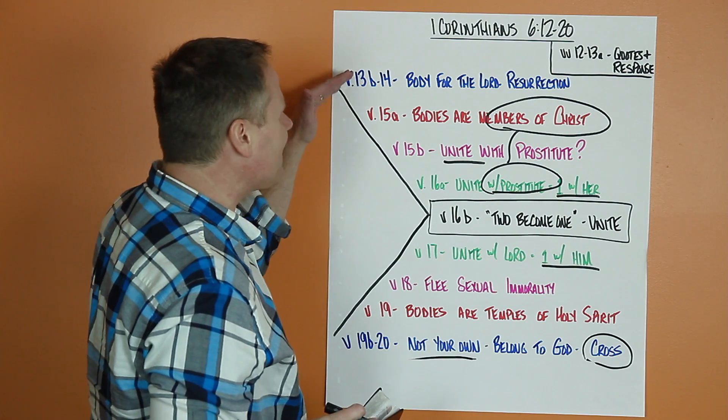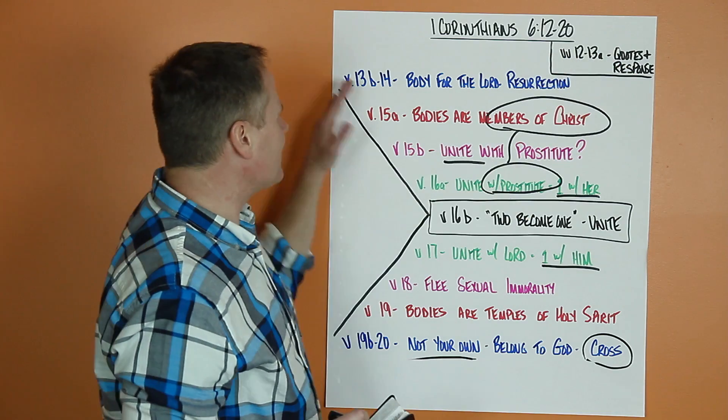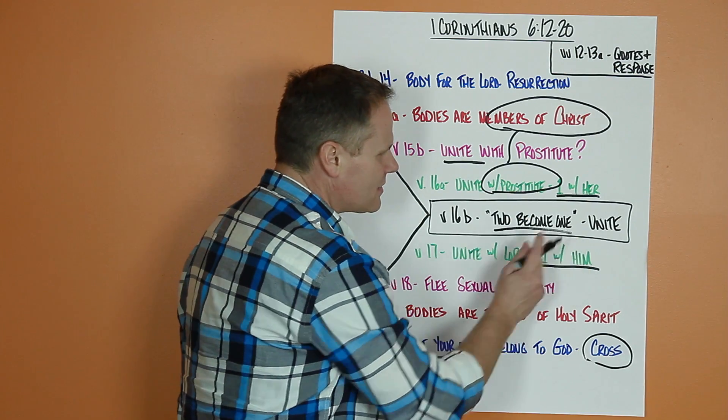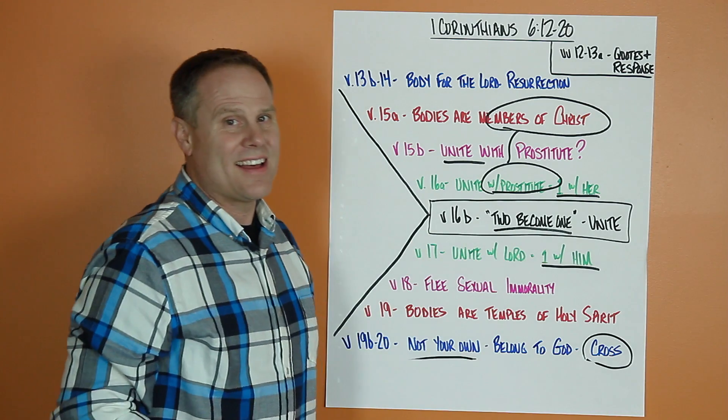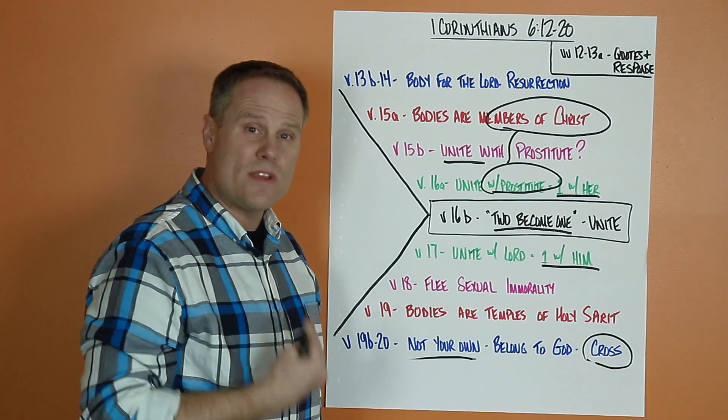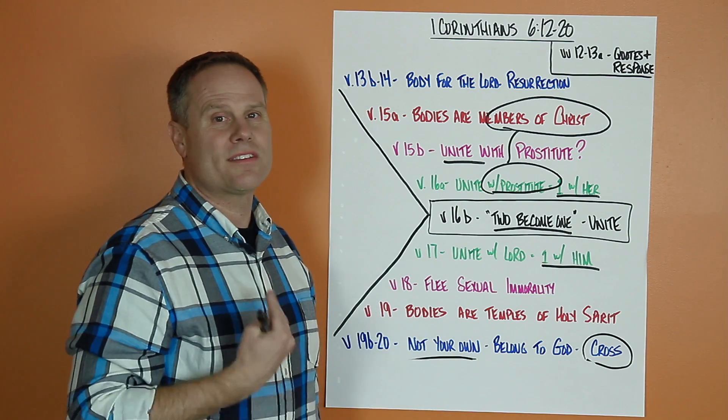I think verses 12 through 20, when he starts with those quotes and responses, then it's a chiastic structure reminding us of how serious sexuality is, that you don't want to mess with that because of how meaningful it is and the reality that we have been united with Christ.